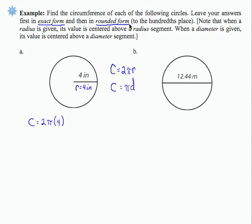If I'm going to use rounded form, then I'm going to use 3.14 as a replacement for pi. Circumference is 2 pi times 4, which is the same as saying 8 pi. This is what's called exact form. It's not rounded. Pi is presented in its most exact form, which is the symbol pi.